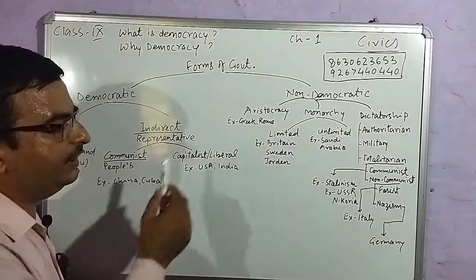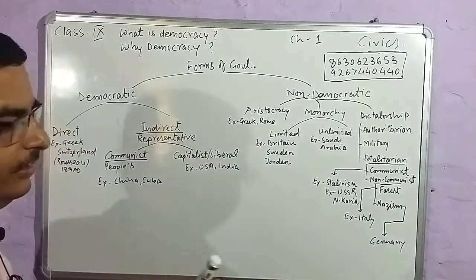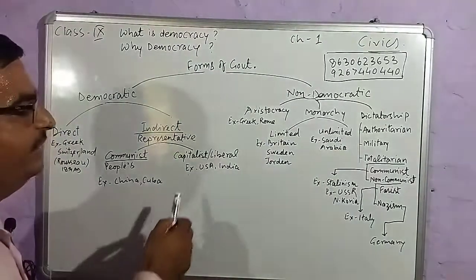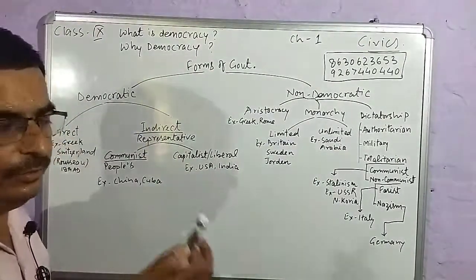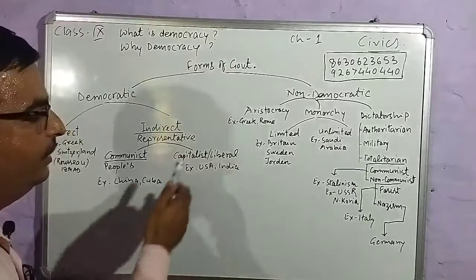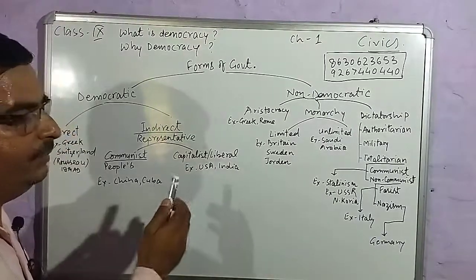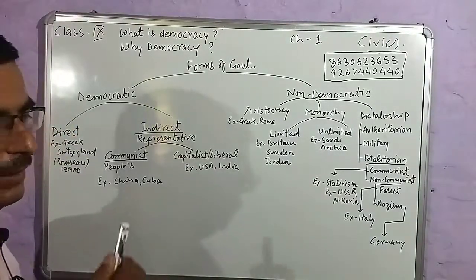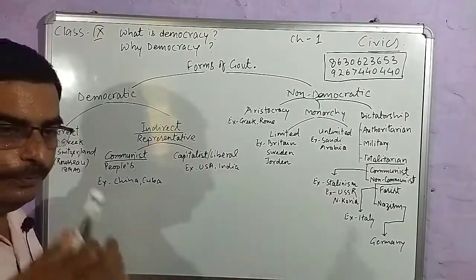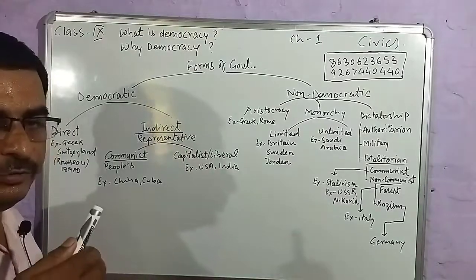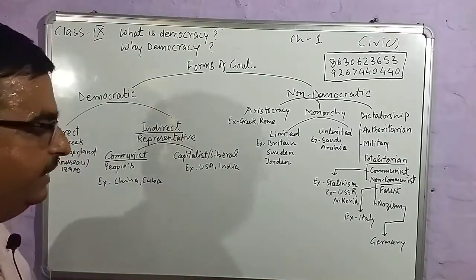The second type is capitalist or liberal democracy, seen in the present world in countries like the United States, India, France, and other countries. In capitalist and liberal democracy, the public has a lot of choice and options.